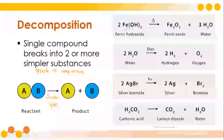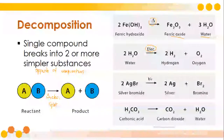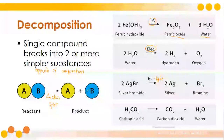Here are examples. Ferric hydroxide, with the help of heat, will decompose into ferric oxide and water. Water, with the help of electric current, will separate into hydrogen and oxygen. Silver bromide, with exposure to light, will separate into silver and bromine. And carbonic acid will separate into carbon dioxide and water. Decomposition is simply the opposite of combination, wherein reactants are divided into their simpler compounds.